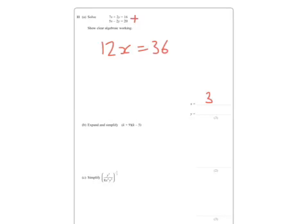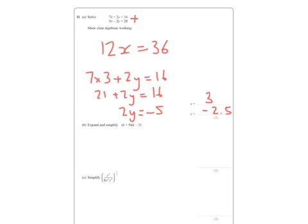Now using 3 in one of the equations, it doesn't really matter which one. I'm going to use it in the first one. So 7 lots of 3 plus 2y equals 16. So 21 plus 2y equals 16. So therefore 2y must be minus 5. So that's got to be minus 2.5 or 5 over 2, whichever. Don't forget to use your answer to the first bit. Use your answer to the first letter you've found to find the answer to the second letter.